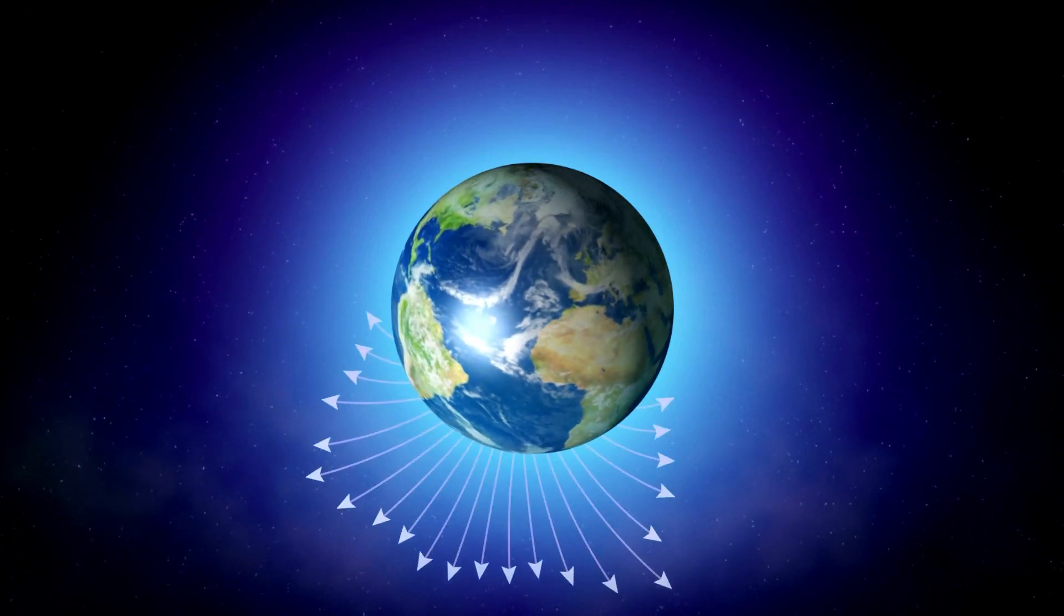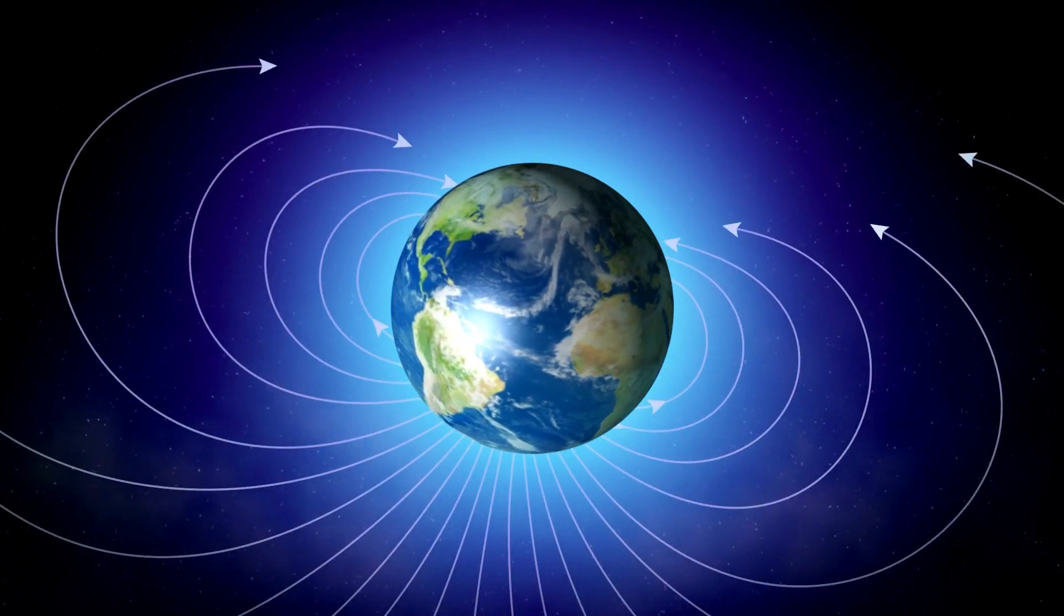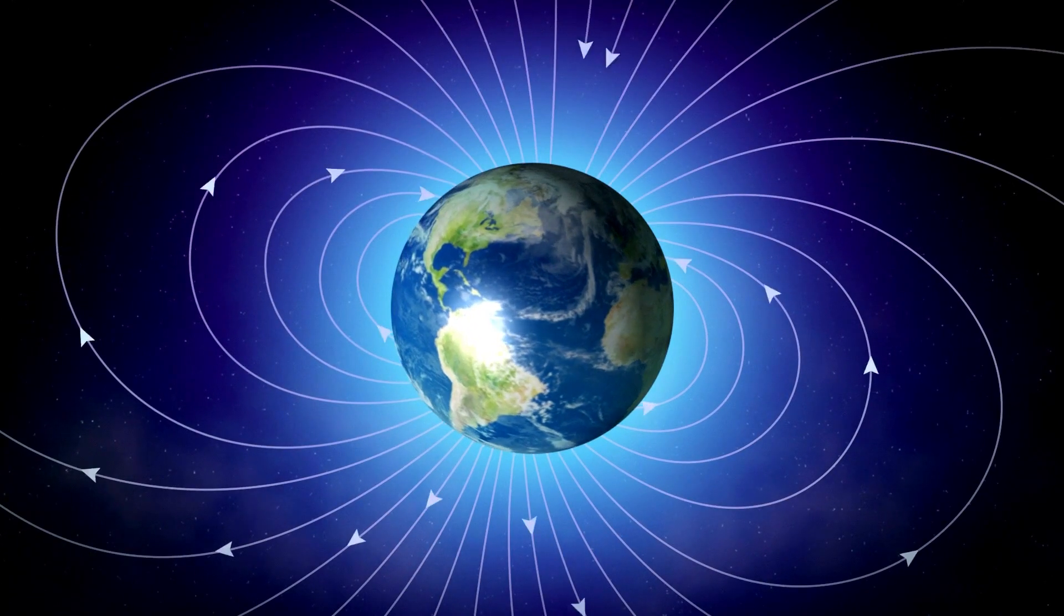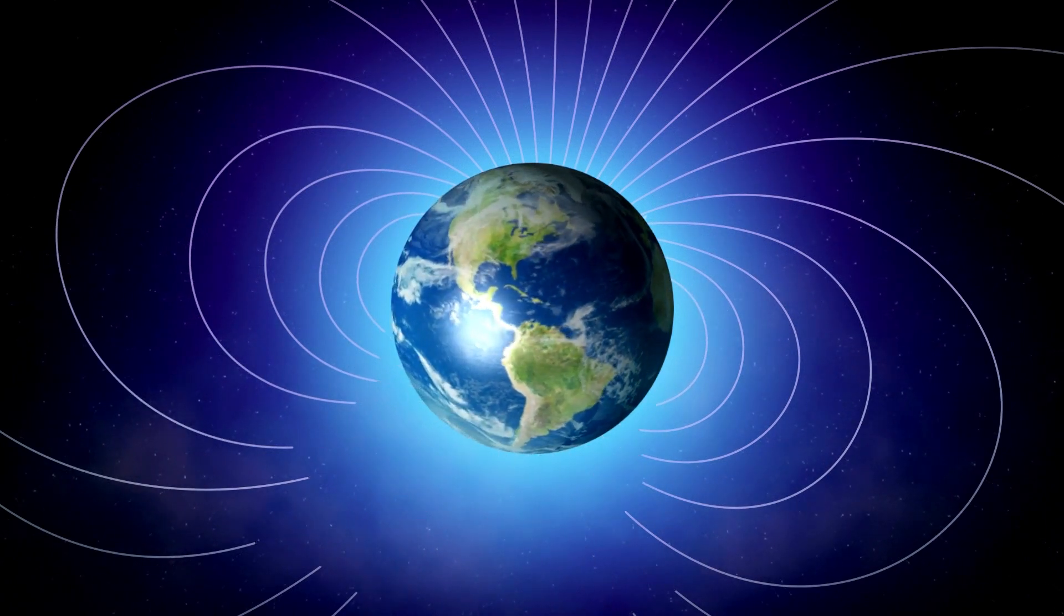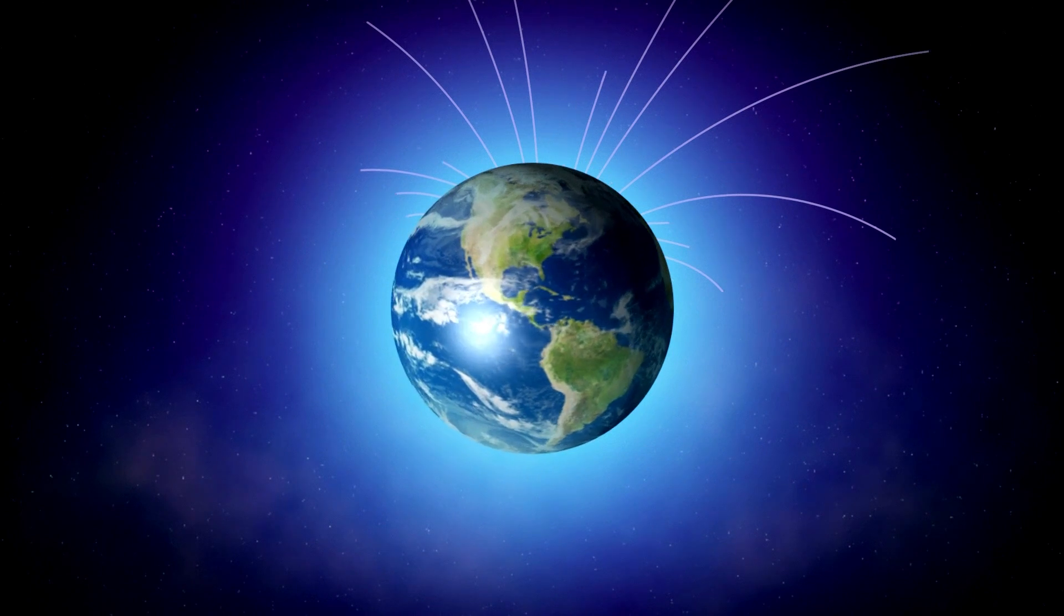The magnetic field is not stable, and polarity reversals occur at unpredictable intervals every 200,000 years on average. This implies the magnetic north and south poles are switched around.